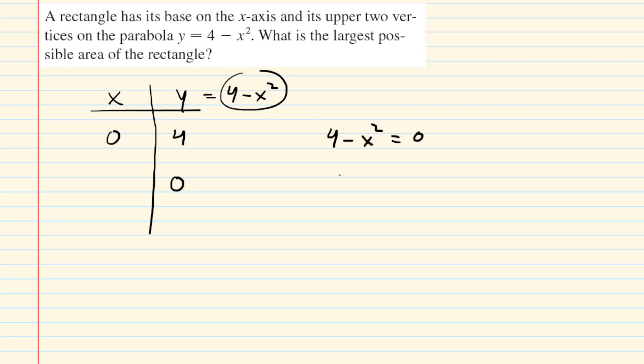We could solve that for x by adding the x squared to the other side and then square rooting. Remember, when you square root 4, you get plus or minus 2. So in fact, there are two x-intercepts or two roots. We have negative 2, 0 and positive 2, 0.